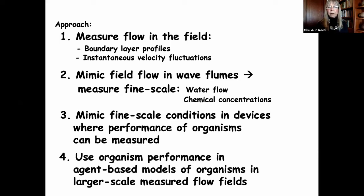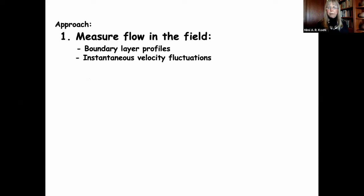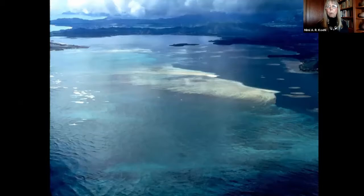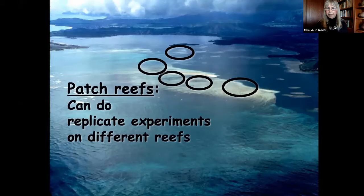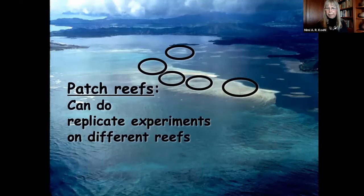We then use what we've learned from those performance experiments with organisms to develop agent-based models in larger-scale measured flow fields. Our field site is Kaneohe Bay on the island of Oahu in Hawaii — a great study site because it has a bunch of patch reefs so we can do replicate experiments on different reefs. One of the things we did was measure water velocity profiles above and within the coral reefs using acoustic Doppler velocimetry.